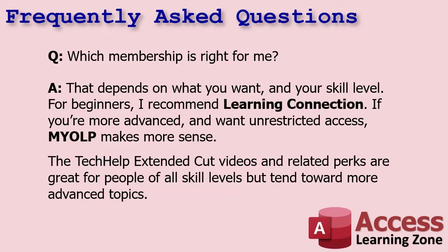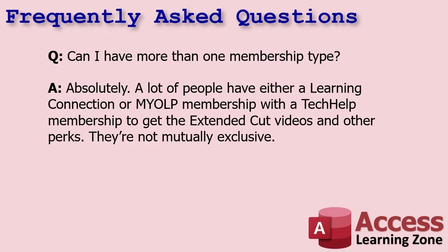The Tech Help extended cut videos and related perks are great for people of all skill levels, but they tend more toward advanced topics — most of the Tech Help videos I make are at the developer/VBA level, though there are some beginner level videos too. Can you have more than one membership type? Absolutely. A lot of people have either a Learning Connection or MyOLP membership combined with a Tech Help membership. They're not mutually exclusive. I wouldn't have both Learning Connection and MyOLP together though — one gives you all the courses and the other gives you a course a week, so you want one or the other, and optionally a Tech Help membership.